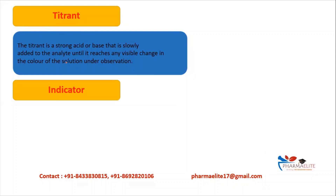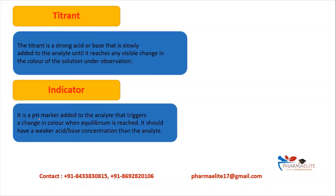The next term is indicator. An indicator is a pH marker added to the analyte. It triggers a change in color so we understand the reaction has reached equilibrium. It should have a weaker acid or base concentration than the analyte, and it is selected according to the analyte to signal that the reaction is complete.